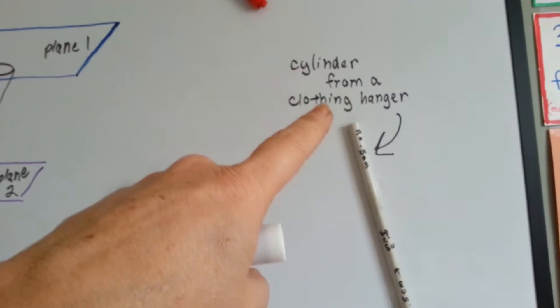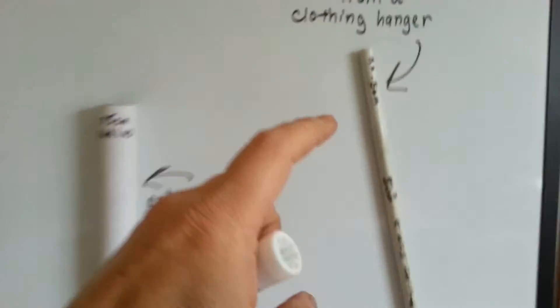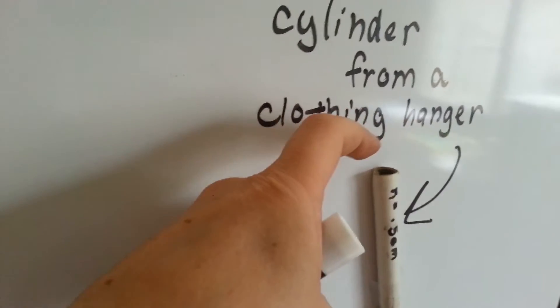This is the cardboard from a clothing hanger from a dry cleaners. See? That is a cylinder. You can see a little hole right there.